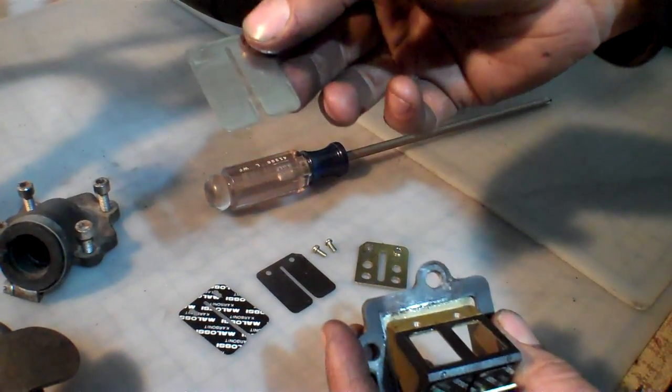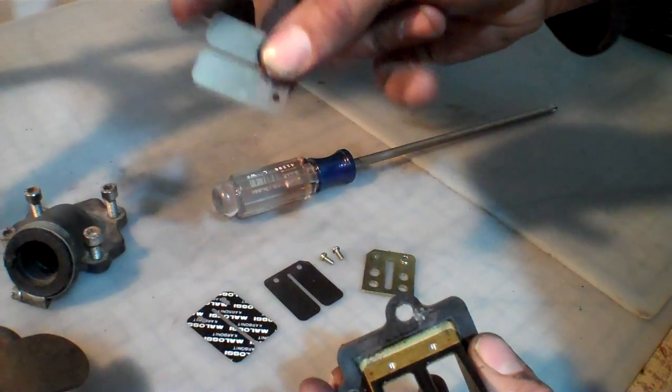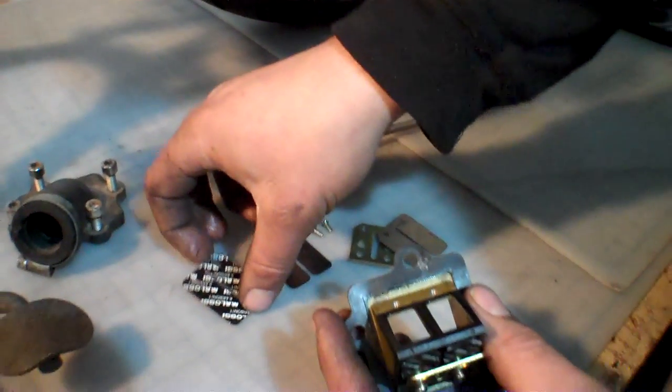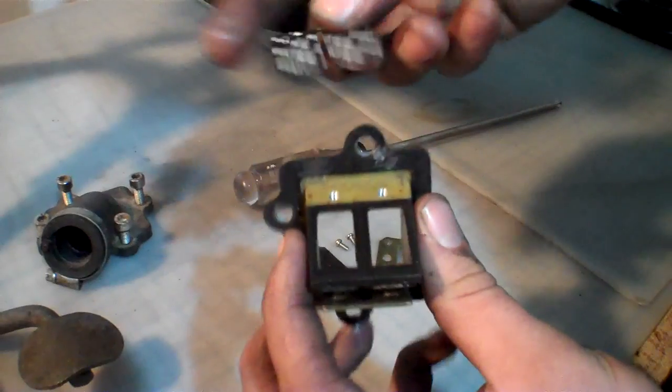So here's your stock stainless steel reed. Not too bad. We're going to upgrade to a Molossi carbon fiber stiffer reed cage right here.